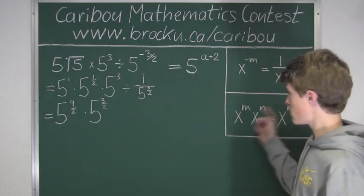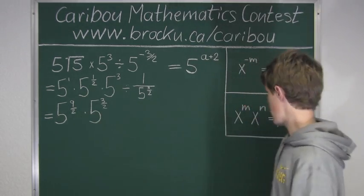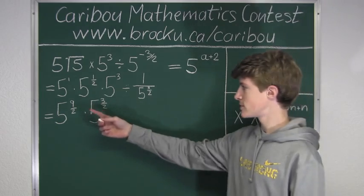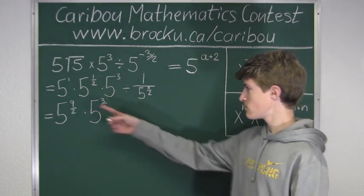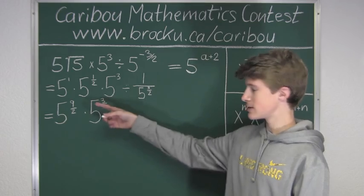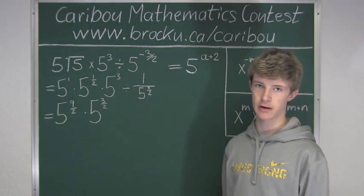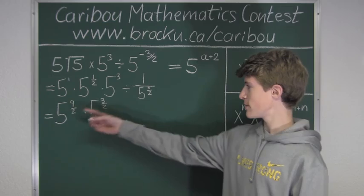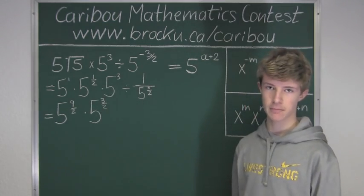Using this formula again, we can use x as 5, and then m and n as 9 over 2 and 3 over 2. So, 9 over 2 plus 3 over 2 is 12 over 2, and 12 divided by 2 is 6. So, we know that this equals 5 to the power of 6.